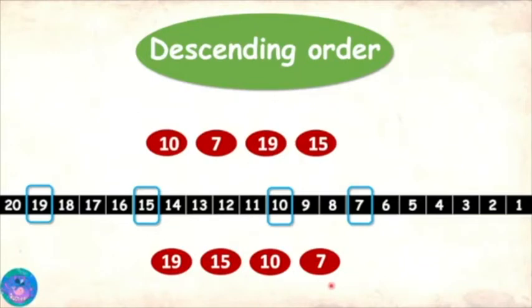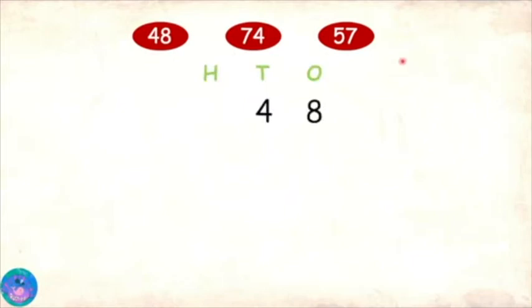Well done, Sam! And if the numbers are big and counting backwards is not easy, then can we use place value for comparison as we did for ascending? Absolutely. Let me show you an example. I have three numbers: 48, 74, and 57.